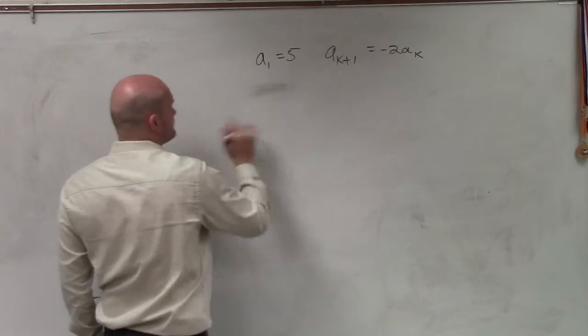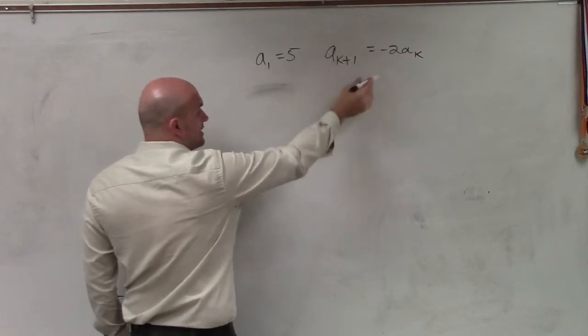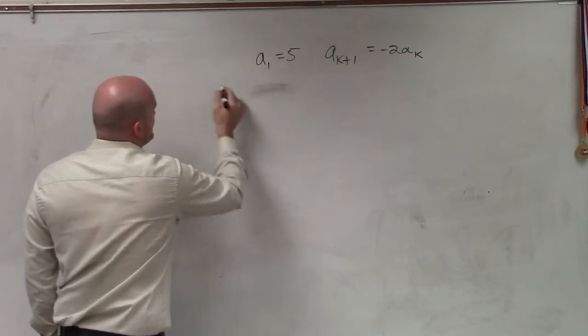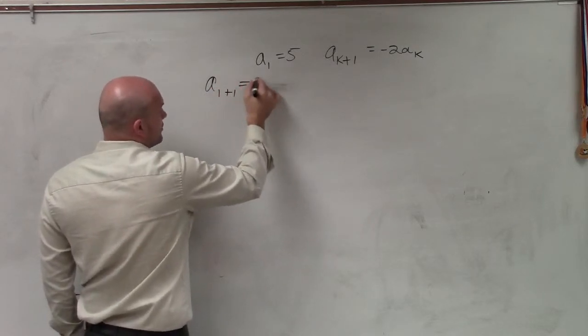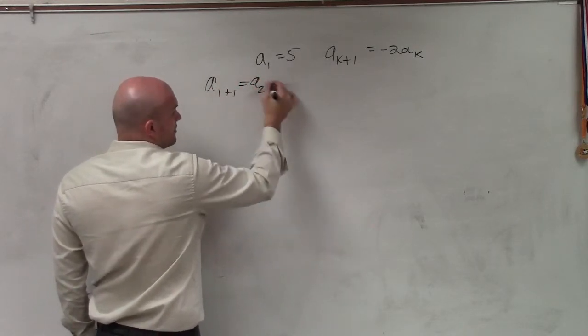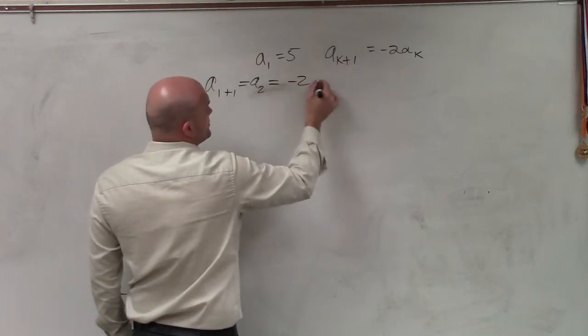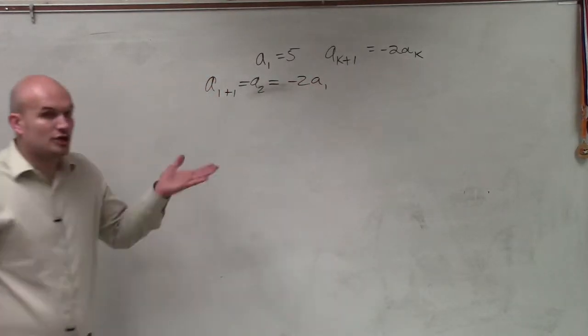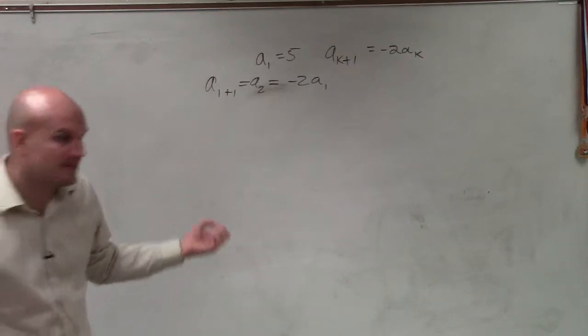Now, hold on. To find a sub 2, we just put in a sub 1 in for k. And notice, if we do that, a sub 1 plus 1 equals a sub 2, which equals putting in again a 1 for k, negative 2 times a sub 1. So to determine what a sub 2 is, we just plug in the previous term into our formula.